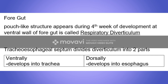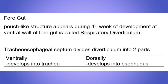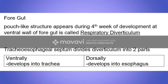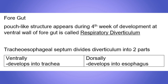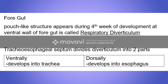The respiratory diverticulum is a pouch-like structure that appears during the fourth week of development in the ventral wall of the foregut. The tracheoesophageal septum divides the diverticulum into two portions: the ventral portion, which later develops into the trachea, and the dorsal portion, which later develops into the esophagus. Initially the esophagus is very short, but its length increases over time.